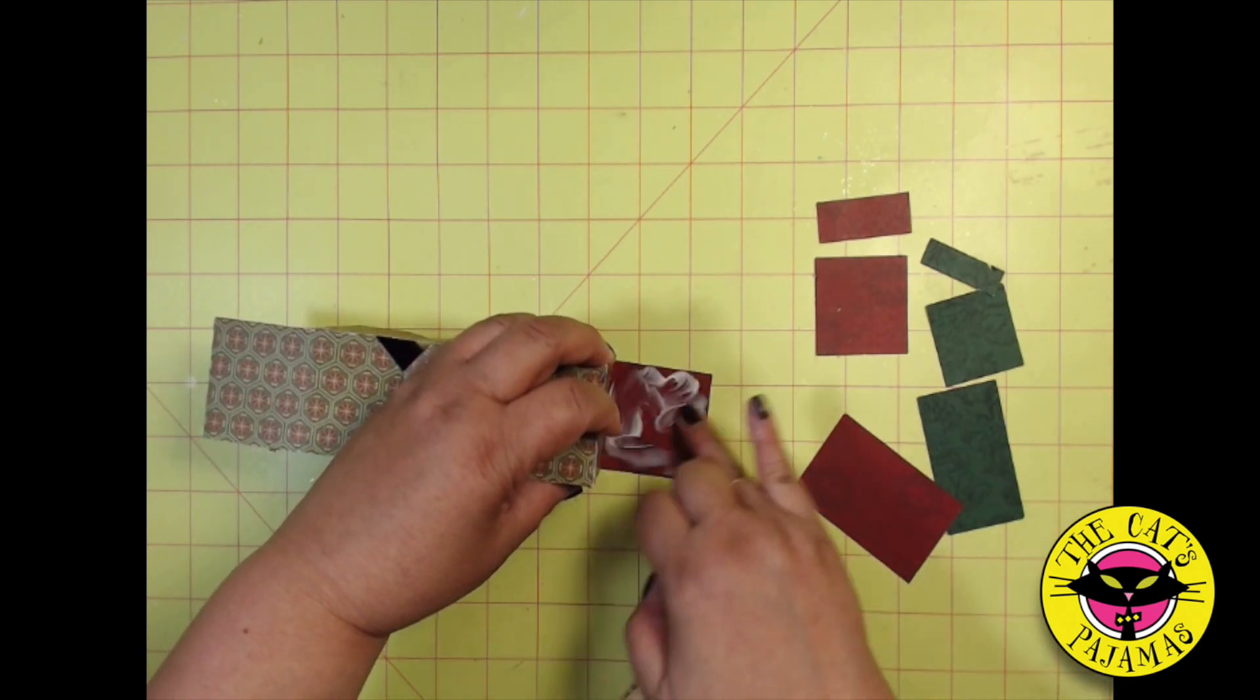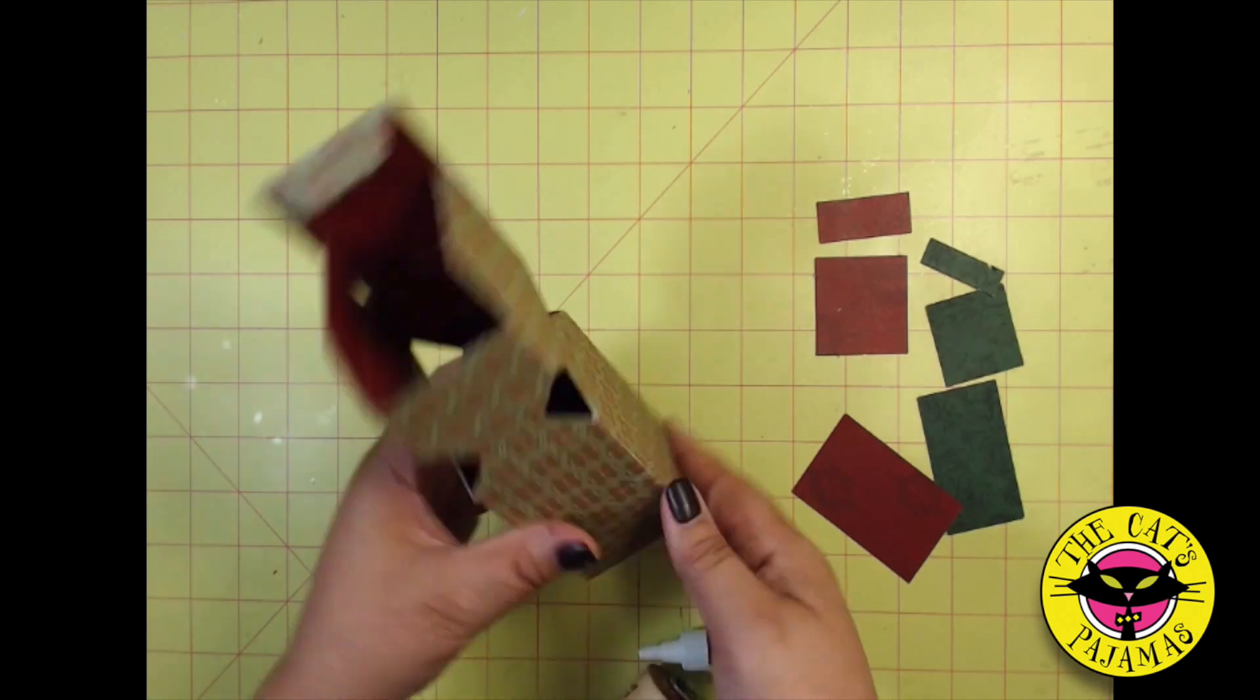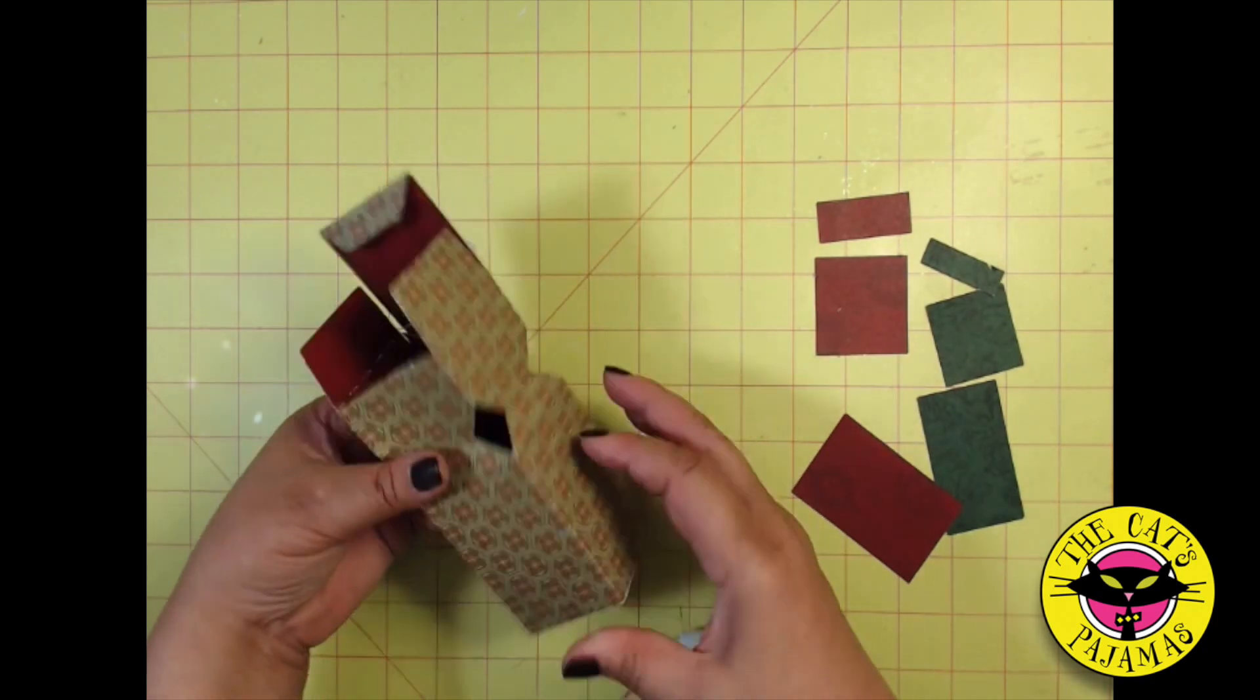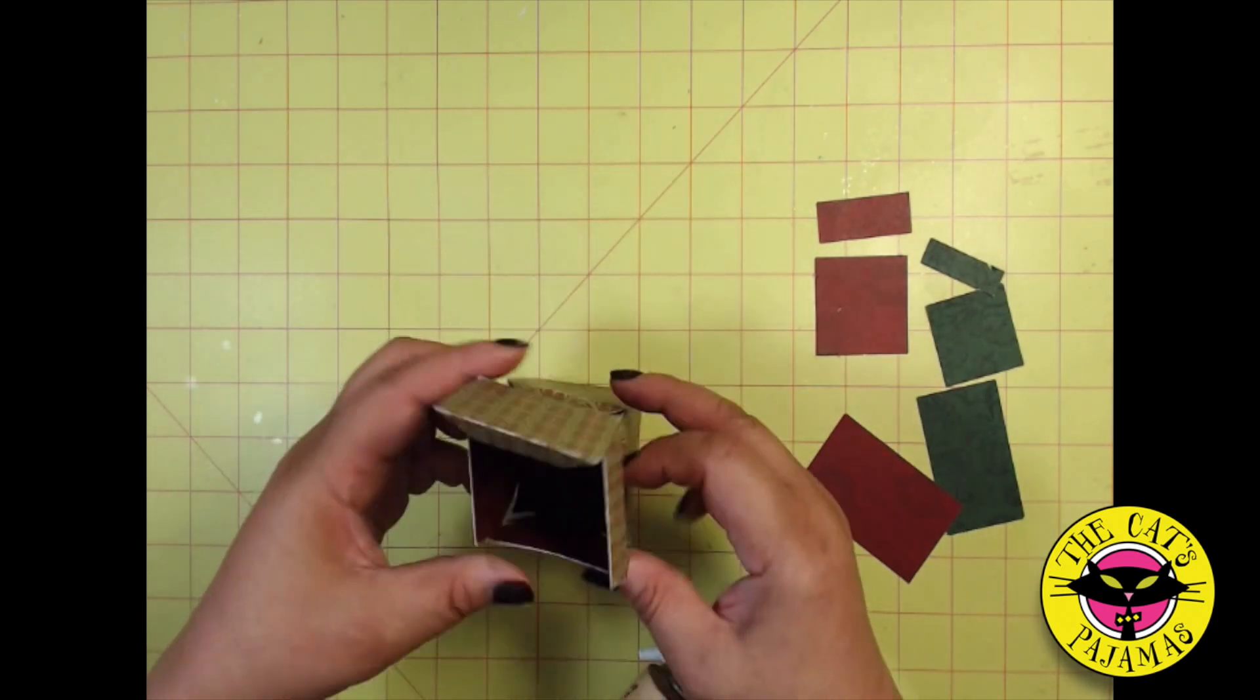If you wanted even more stability, you could add glue to the inside flaps as well. But for the sake of time, I'm just going to glue the bottom one.